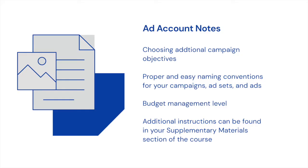Just a couple of additional things to note here. We roughly went through the campaign objectives and you saw there were multiple ones. For the majority of them they're pretty self-explanatory, with a couple of specific rules — for instance, lead generation campaigns require an associated form. For the sake of what we're learning, the best objective is always going to be conversions. We want to make sales through Facebook and Instagram, and sales equal conversions.